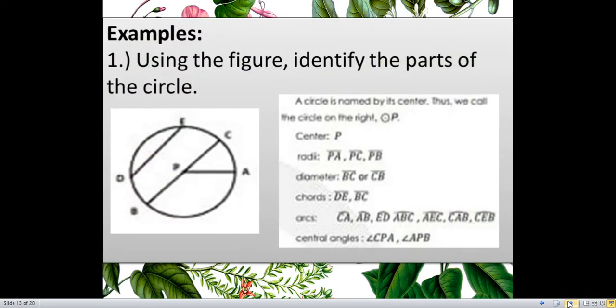Okay, let us have some examples, more examples. Using the figure, identify the parts of the circle. We have here this figure. Our center now is P. So, a circle is named, again, just to remind you, a circle is named by its center. Thus, we call the circle on the left, circle P. And, when you are asked what is the center, just answer P.